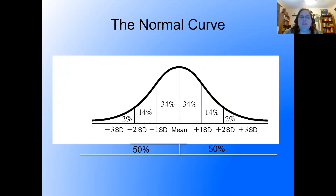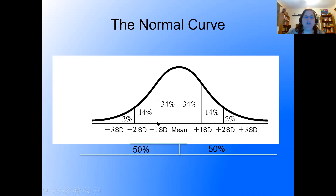What's interesting about the normal curve — and this doesn't necessarily apply to any other type of distribution, which is what makes it special — is that the distance between the mean and one standard deviation up will always capture about 34% of people. Going one standard deviation down also captures about 34%. Going from one standard deviation to two standard deviations captures another 14%, whether up or down.